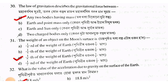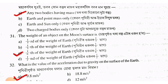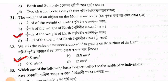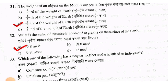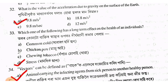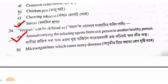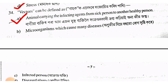The weight of an object on the moon's surface is 1/6 of the weight on Earth. The acceleration due to gravity is 9.8 m per second square. The factors depend on the size of the Earth.